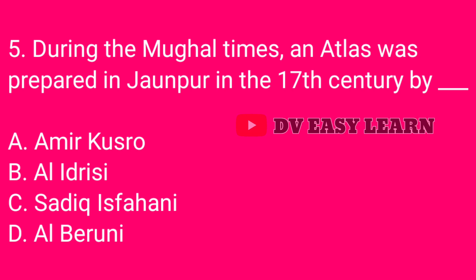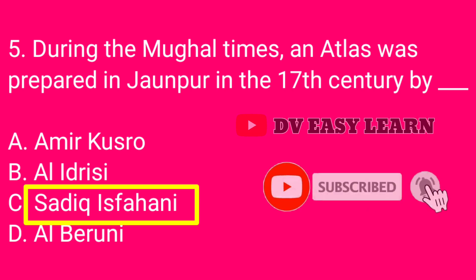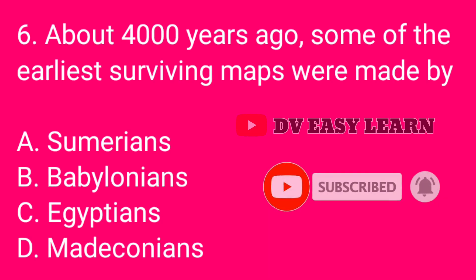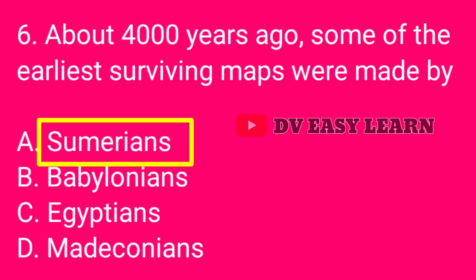Question number 5: During Mughal times, an atlas was prepared in Janpour in the 17th century by — correct answer: Sadiq Isfahani. Question number 6: About 4,000 years ago, some of the earliest surviving maps were made by — correct answer: Sumerians.